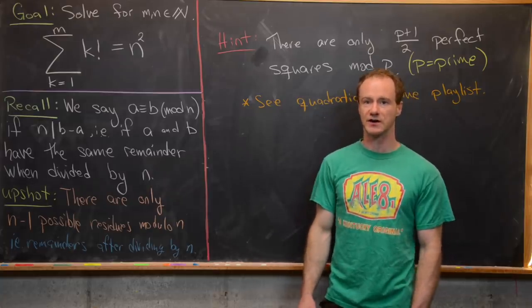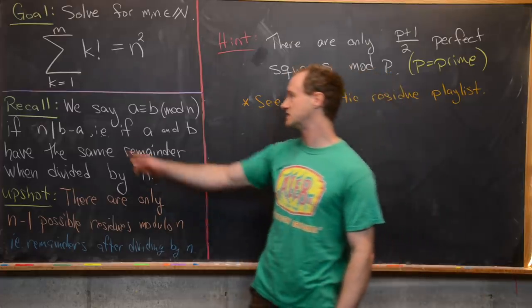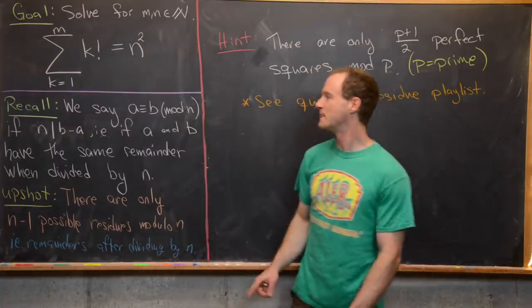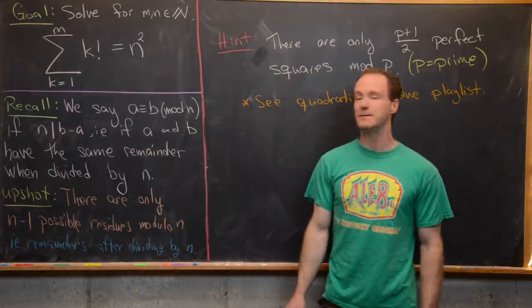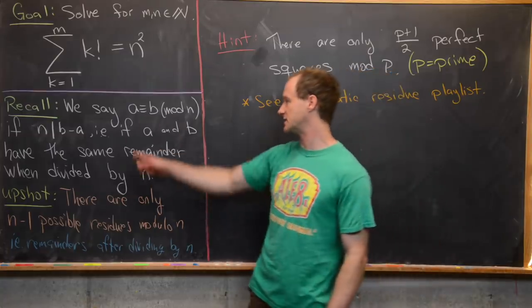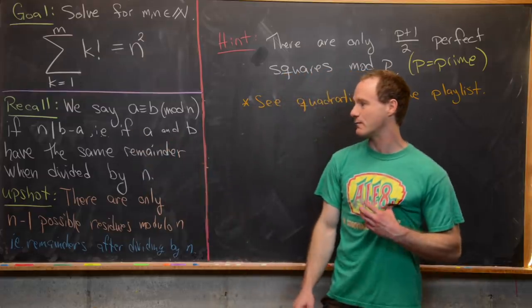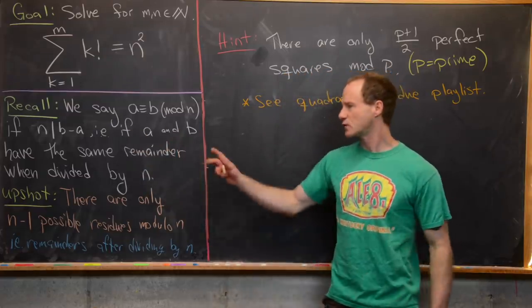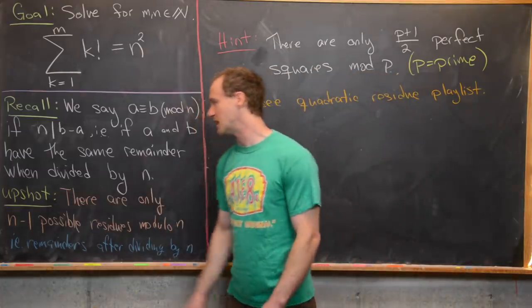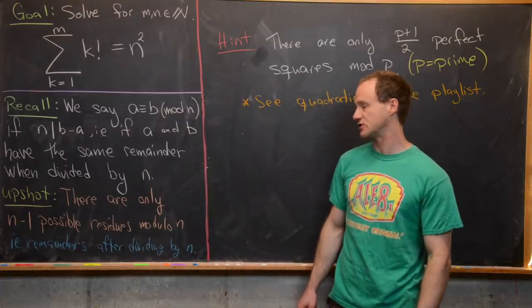The major tool we're going to use here is congruence modulo n. We say that a is congruent to b mod n — this is the notation — if n divides b minus a. There's actually a much more intuitive way to think about that: a and b have the same remainder when divided by n. This gives us a big upshot: there are only n possible residues modulo n.